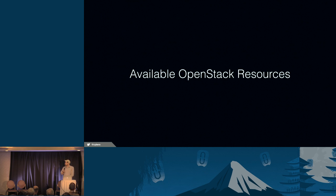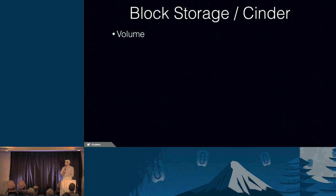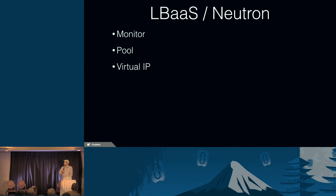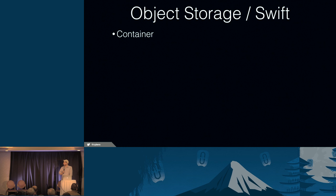What resources are available in Terraform for OpenStack? On the compute side: instances, floating IPs, key pairs, security groups, and server groups. For block storage: volumes. For networking with Neutron: networks, subnets, routers, router interfaces, and floating IPs. Nova Network is also supported implicitly through the instance resource. Load balancing as a service supports monitors, pools, and virtual IPs. Firewall as a service has firewalls, policies, and rules. And for object storage, it supports containers.